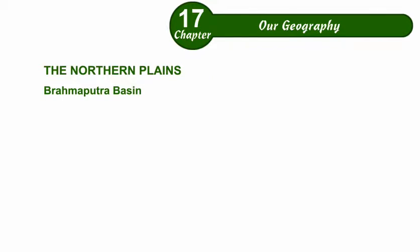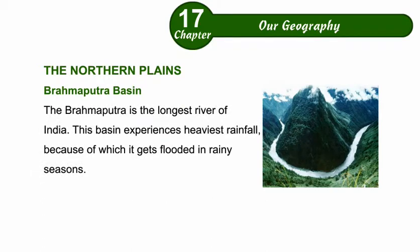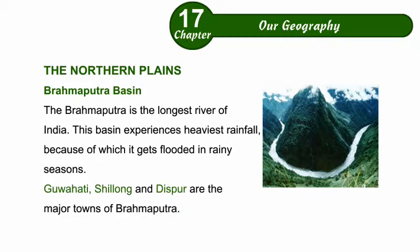Brahmaputra Basin is the easternmost part. In Assam, it forms a narrow strip and is surrounded by hills on three sides. The Brahmaputra is the longest river of India. This basin experiences the heaviest rainfall, because of which it gets flooded in rainy seasons. Guwahati, Shillong, and Dispur are the major towns of the Brahmaputra basin.